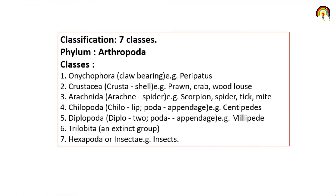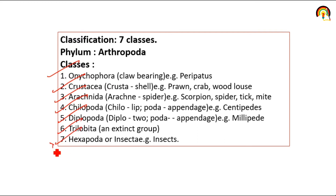Phylum Arthropoda में total seven classes आते हैं: Onychophora, Crustacea, Arachnida, Chilopoda, Diplopoda, Trilobita, and Hexapoda. जिसमें से Hexapoda important हो जाता है। Hexapoda, Crustacea and Onychophora — इनसे questions mainly पूछे जाते हैं।